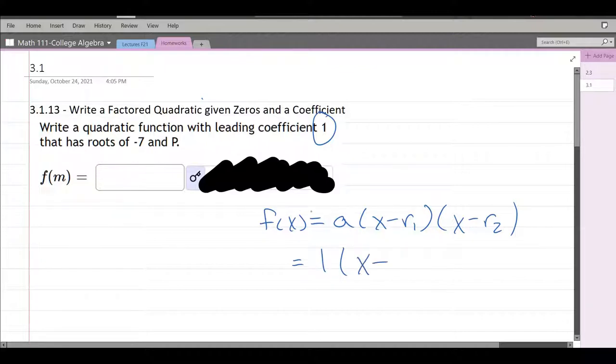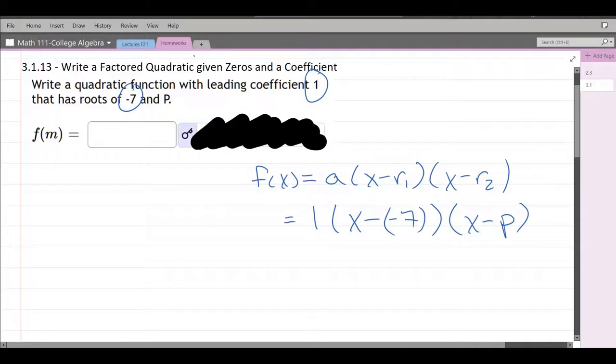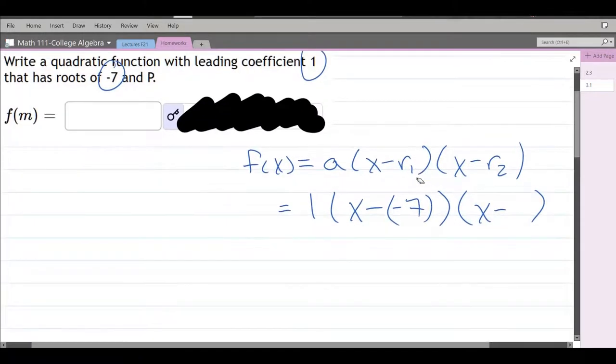And what are the roots? Negative 7. This one's a little tricky. It's x minus a negative 7. Now, the other one is p. What in the heck? Don't worry. x minus p. I think it's a capital P, so I probably should put a capital P right there.